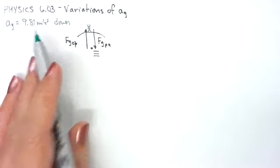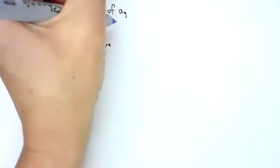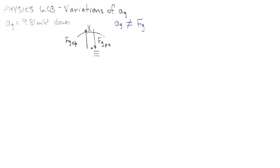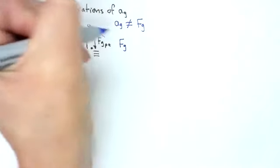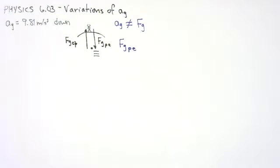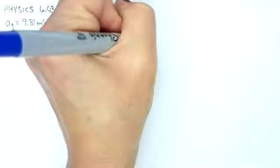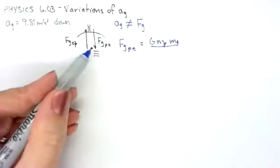Well, where does this come from? First of all, don't confuse a sub g with F sub g. This is not the same as the force due to gravity. If we look at the force of gravity on the person by the earth, we're going to have Newton's constant, the mass of the person, the mass of the earth, and we're going to need the distance.